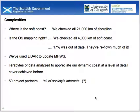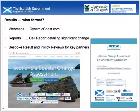There are over 50 project partners and we've attempted to appraise all of society's interests. The results will come in various formats. Most useful, perhaps, are the web maps which can be viewed on dynamiccoast.com, but also a series of summary reports taking each section of the coastline — each coastal cell — detailing the areas of significant change. There'll also be bespoke results and policy reviews for key partners.